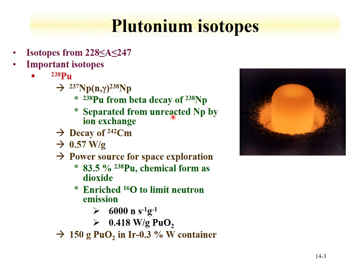Plutonium-238 is separated from the neptunium-237 target by ion exchange. You can also obtain plutonium-238 by the decay of curium-242. Since it's a relatively short-lived alpha-emitter, it has a lot of energy associated with it, about half a watt per gram, so it is used as a power source for space exploration. You can make plutonium-238 oxides with up to around 84% plutonium-238, with some plutonium-239 present. As this oxide is formed, they actually enrich the oxygen in oxygen-16 to limit neutron production.